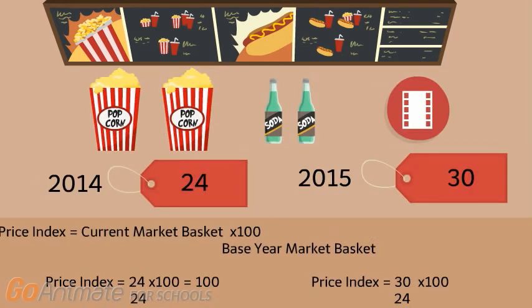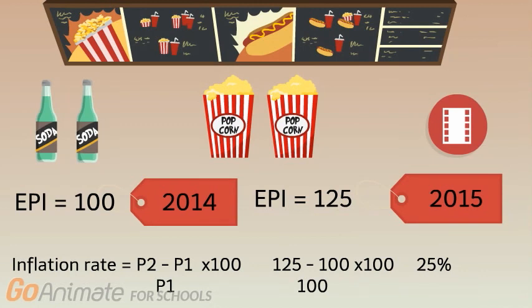When the Bureau of Labor Statistics computes the CPI for the United States, it follows the same basic steps: 1. Define the basket of goods and services and their appropriate weights. 2. Determine the prices of goods across periods. 3. Convert to the index number for each period. Once the CPI is computed, economists use it to measure the inflation rate — calculated as the percent change in price level. Using the CPI, the inflation rate from period 1 to period 2 is: (Period 2 minus Period 1) divided by Period 1, times 100. In our EPI example, the index rose from 100 to 125, giving an inflation rate of 25%, computed as (125 − 100) / 100 × 100 = 25%.